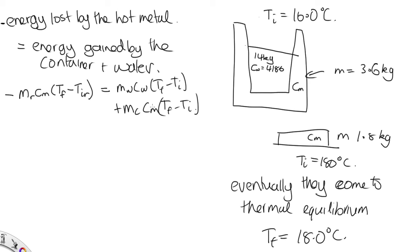Now what we're trying to do is solve for this Cm. Everything else is actually known. So let's just do some algebra. Let's pull Cm out as a common factor. We'll move this term across to here. So this can be written as mr. And we can write this as T initial of rod minus Tf, just putting that negative sign inside.